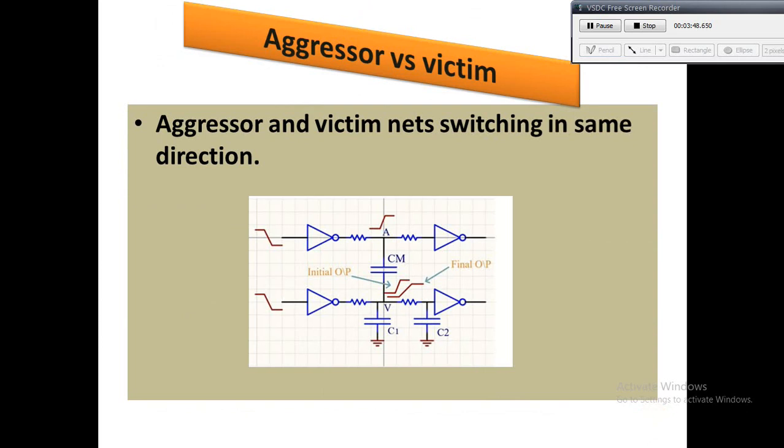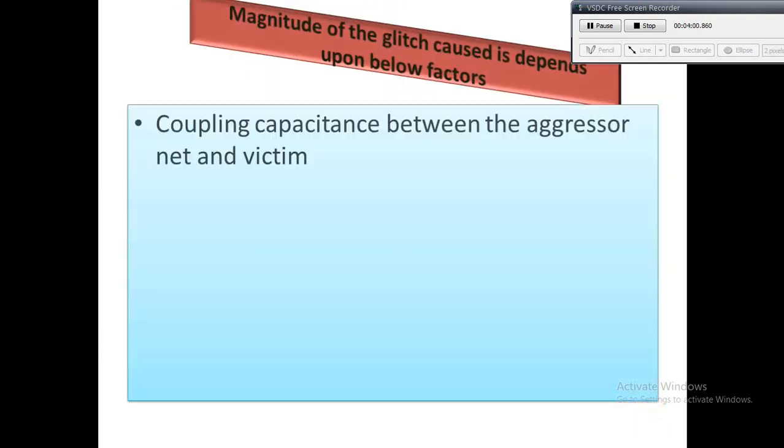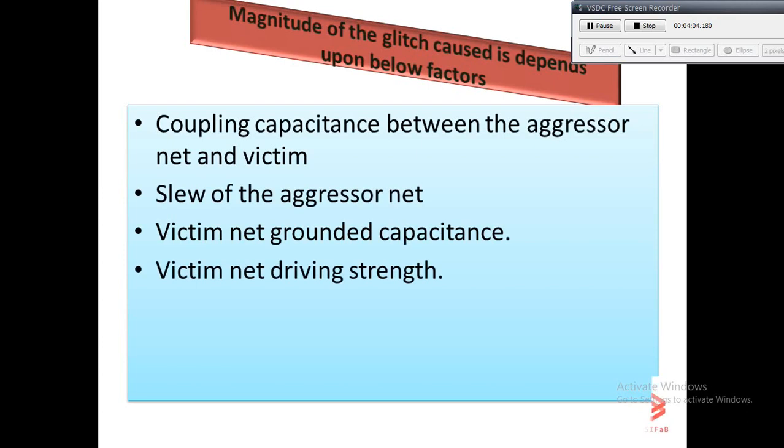As we have seen, the glitch is the main cause for which crosstalk occurs. The magnitude of the glitch depends upon the below factors. If the coupling capacitance between aggressor and victim net is less, then crosstalk will also be less.